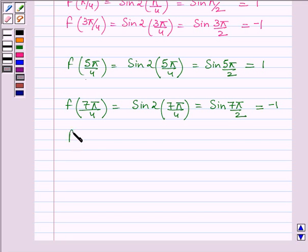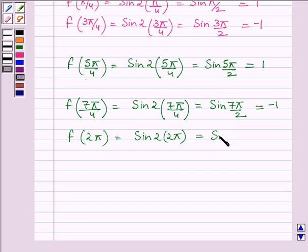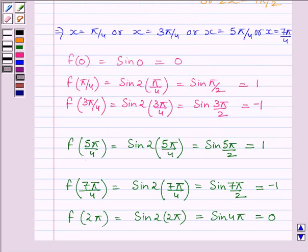Now let us find f(2π), which equals sin(2 × 2π), equal to sin(4π), which is equal to 0. Clearly we can see the function attains its maximum value at x equal to π/4 and x equal to 5π/4.